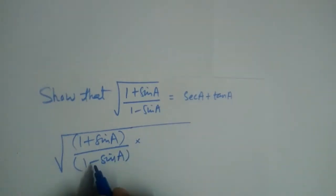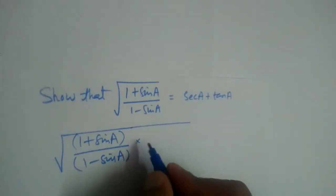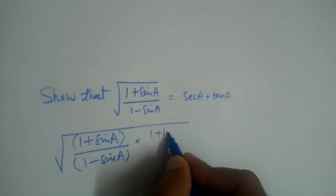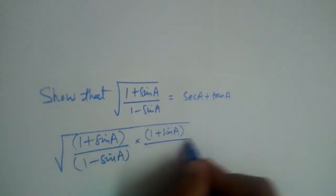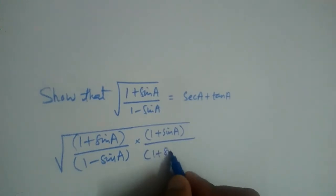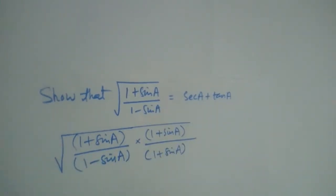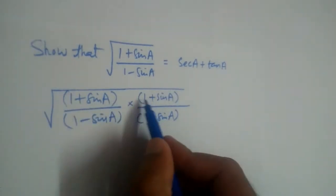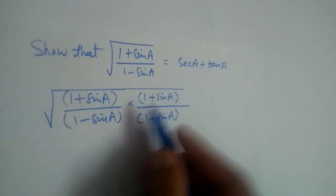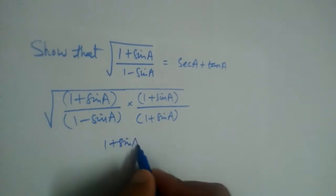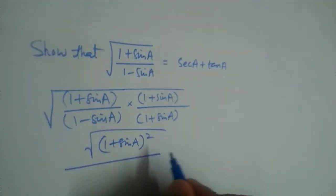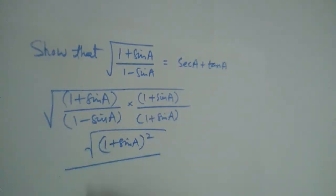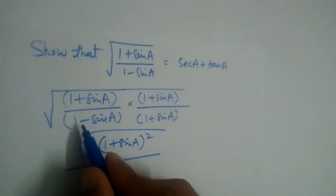We will multiply the numerator and denominator by (1 + sinA) — we are rationalizing this. So we have (1 + sinA) on both top and bottom. In the numerator, (1 + sinA) times (1 + sinA) becomes (1 + sinA) whole square under the root.